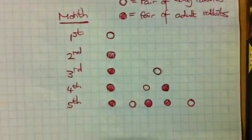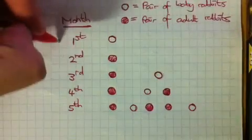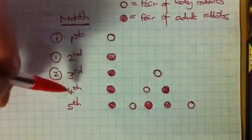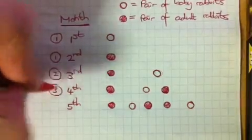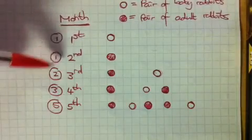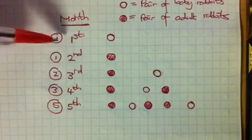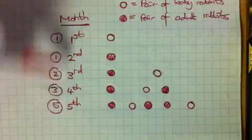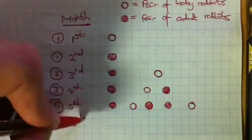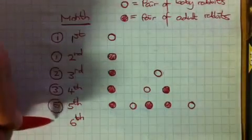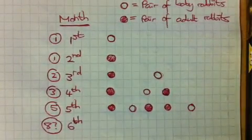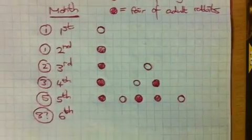Now if we look at how many pairs of rabbits we've got each month: in the first month we had one, in the second month we still had one, in the third month we had two, in the fourth month we had three, and in the fifth month we had five altogether. We start to see that it looks like we're getting the Fibonacci sequence for the total pairs of rabbits after each month. So if we were to work out the pairs of rabbits after six months, we'd think that should be eight, because that's the next number in the Fibonacci sequence — let's see whether we get eight or not.